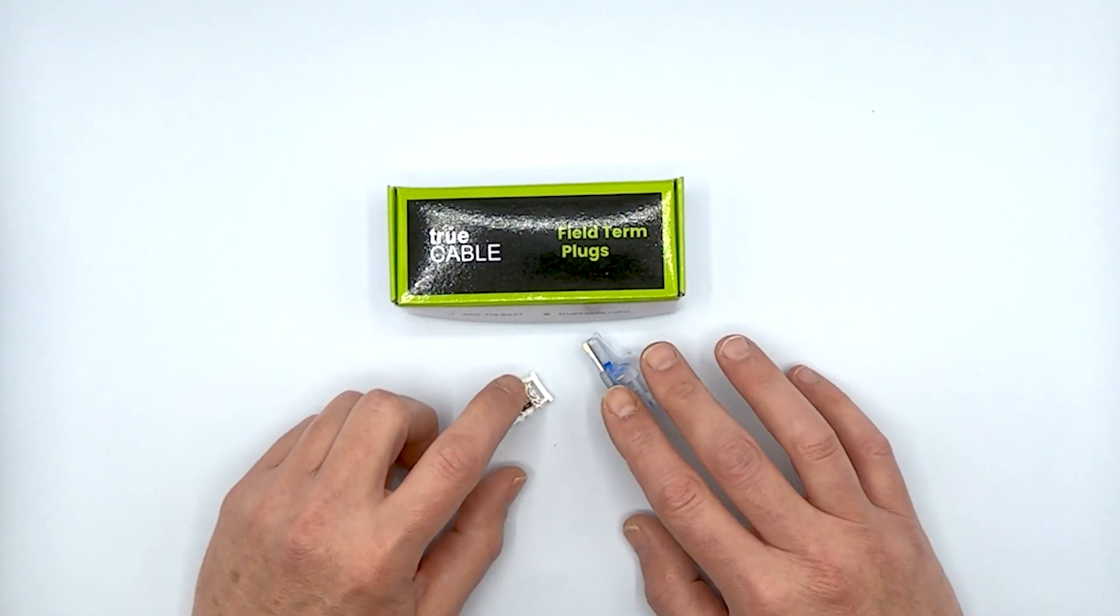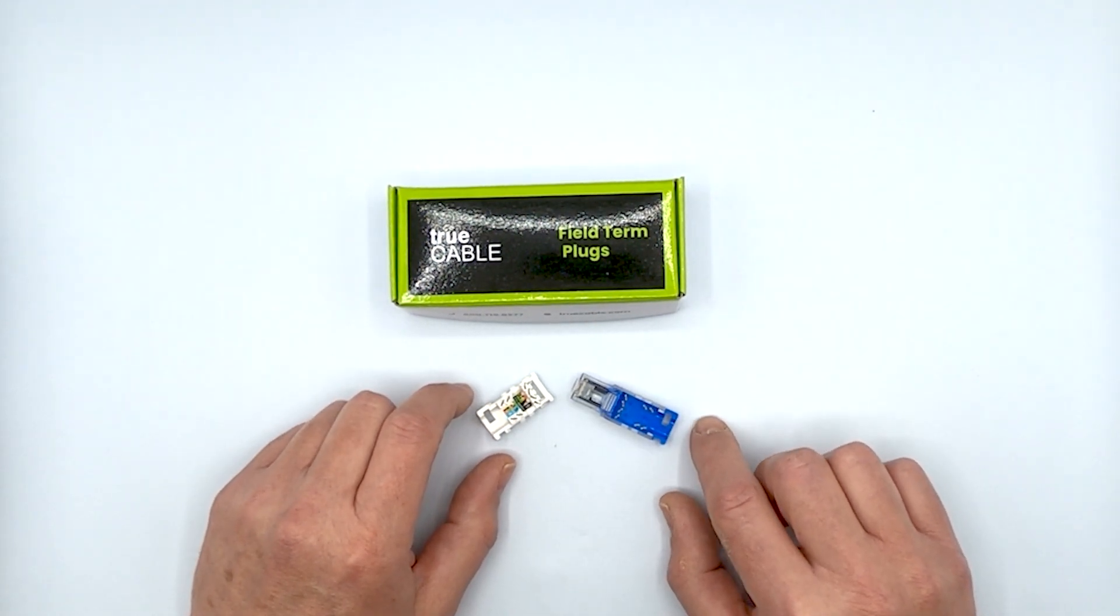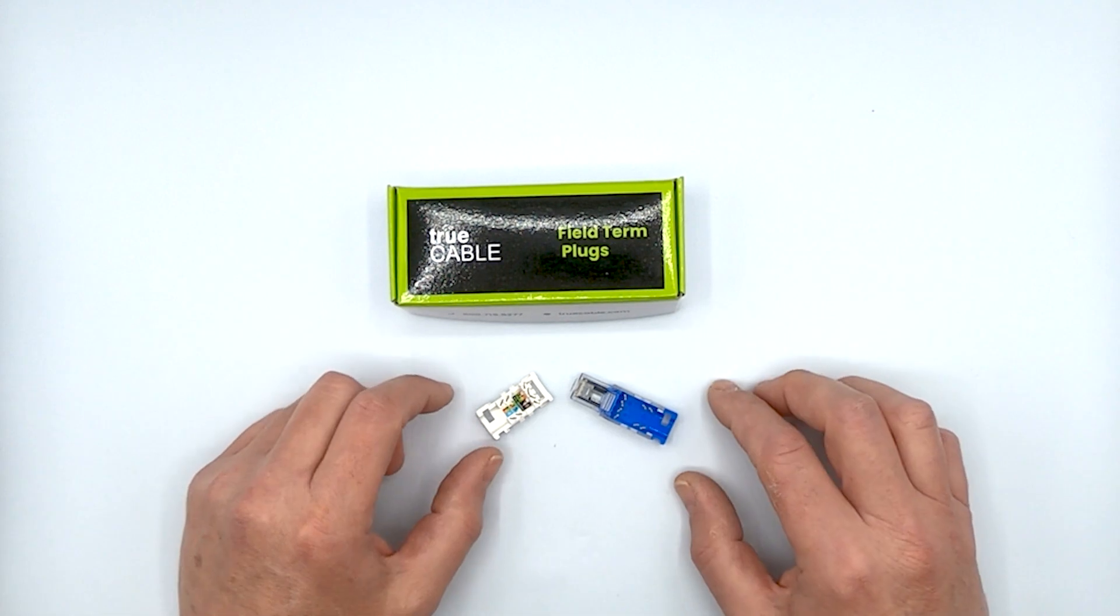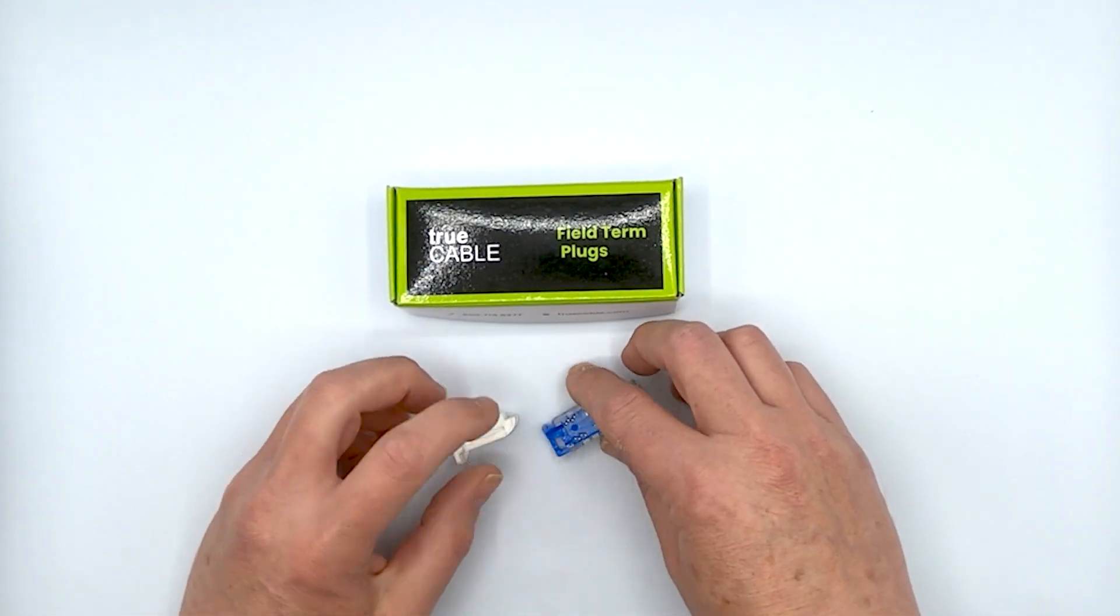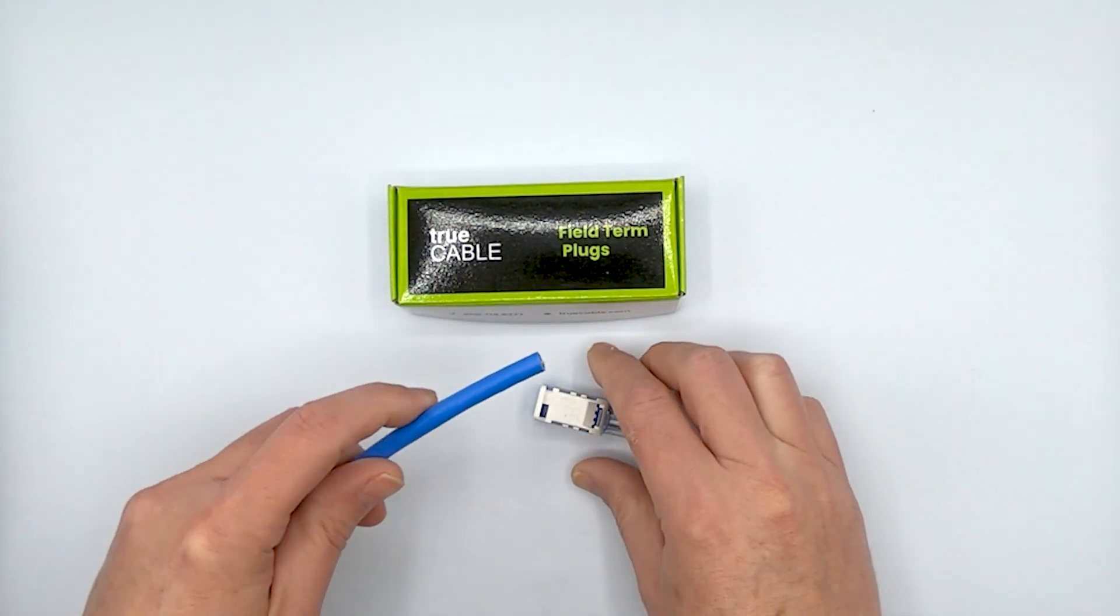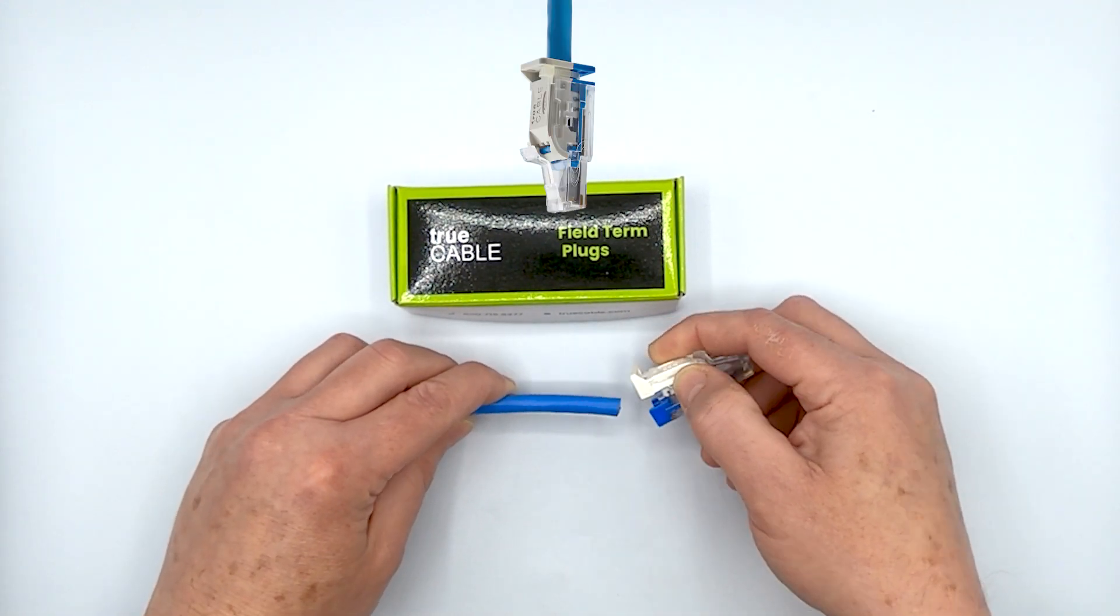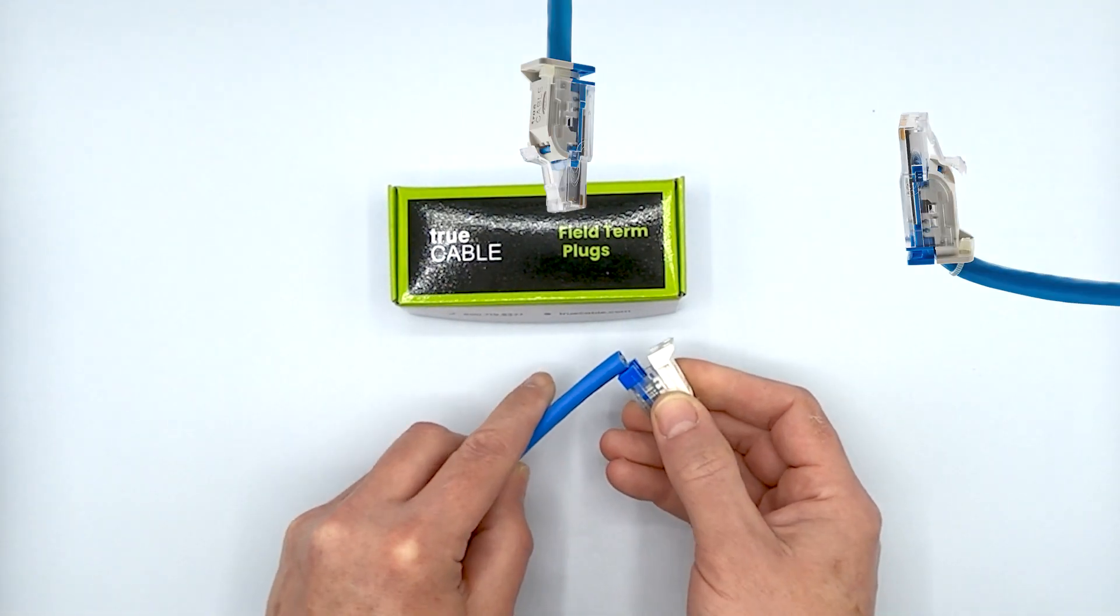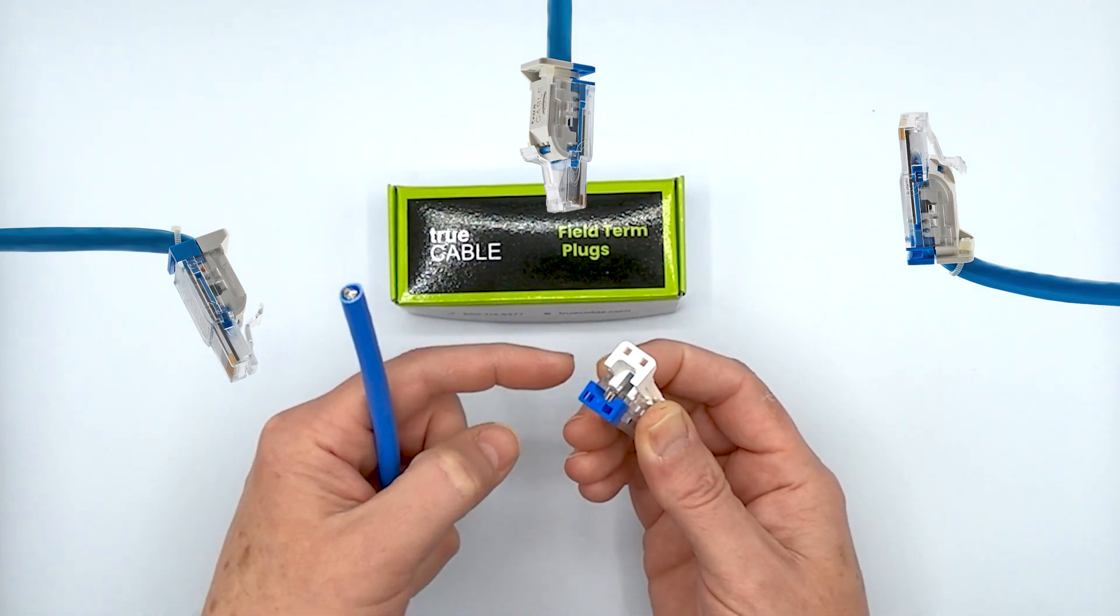I believe this is the only unshielded field termination plug on the market that's readily available. This is a three-way field termination plug, which allows you to terminate your Category 6A cable going straight in, on an angle up, or coming up from down because there's various ways of attaching the cable.